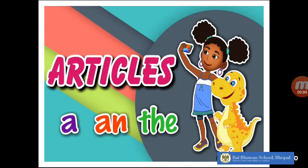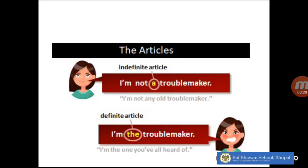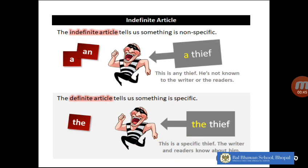Hello children, I hope you all are keeping well. In our last videos we talked about articles. An article is a word that comes before a noun. Articles are used to point out people or things. Articles are of two types: indefinite articles and definite articles.